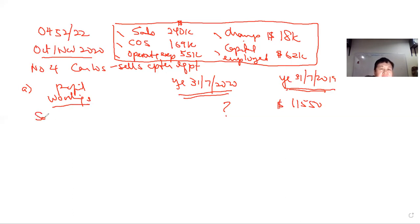So very simple. For profit, it will be sales minus cost of sales minus operating expenses. And so your working is just $240,000 minus the cost of sales, $169,000, and of course minus the operating expenses, $55,000. And that will give you $16,000.